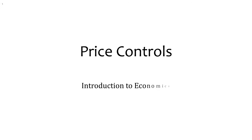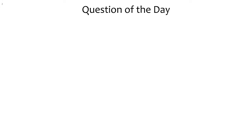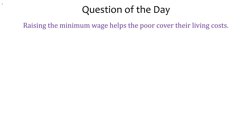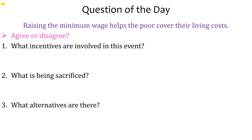Price controls — this is something that affects you directly, and you're going to write about it in your term project. Raising the minimum wage helps the poor cover their living costs. Do you agree or disagree, and what are the incentives, sacrifices, and alternatives involved? Pause here, record the slide number, write the sentence, write your answer whether you agree or disagree, and at least two points for each of the items.